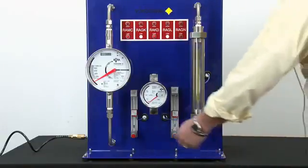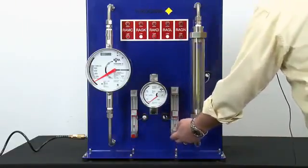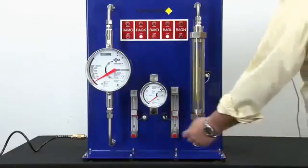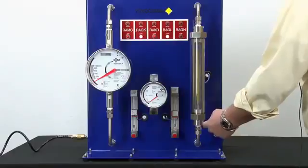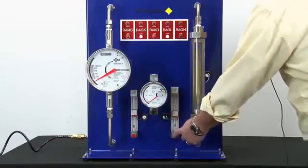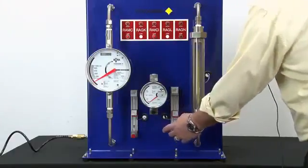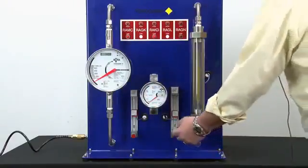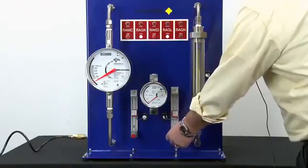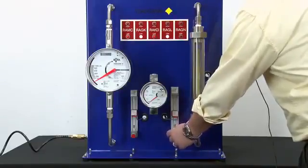This is our RAGK and RAGL model rotometers. Both meters are rated to 230 psi and 200 degrees Fahrenheit. They come with an optional needle valve which can be placed on the inlet or outlet. Adjustable limit switches are available and can be added.